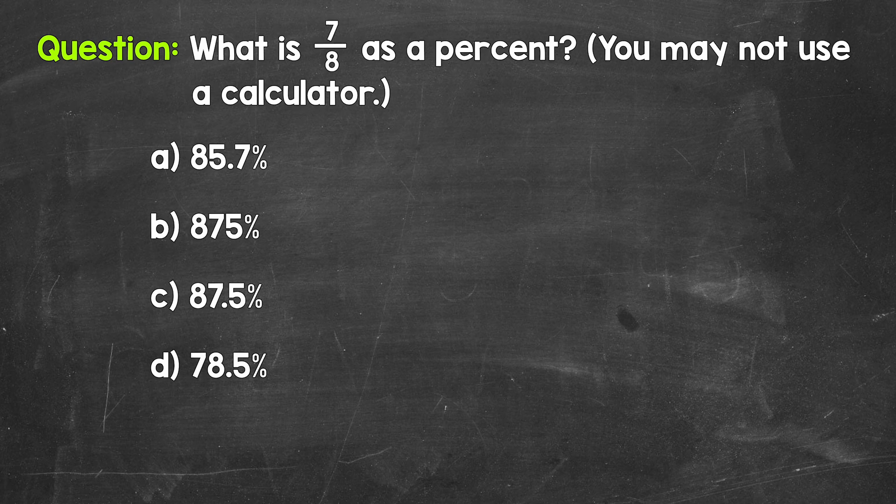So we need to start by converting this to a decimal by dividing. So for 7/8, we can set this up as 7 divided by 8. Then we go through the division process.